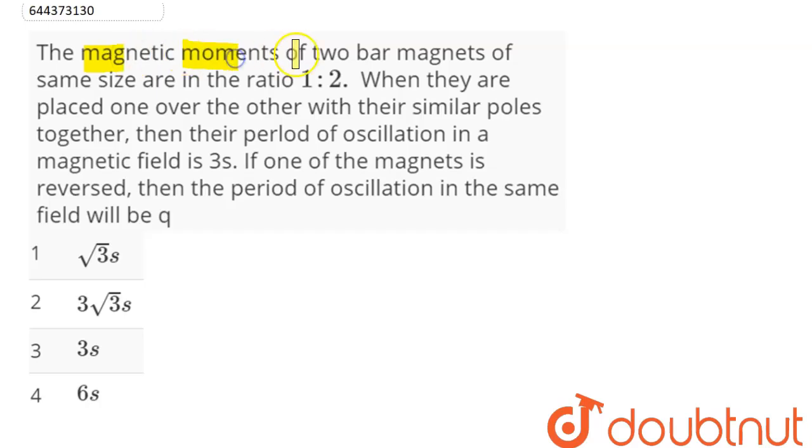The magnetic moments of two bar magnets of same size are in the ratio 1 is to 2. When they are placed one over the other with their same poles together, then their period of oscillation in a magnetic field is 3 seconds. If one of the magnets is reversed, then the period of oscillation in the same field will be.